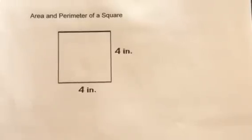We're going to solve the area and perimeter of a square. Remember that a square has all equal sides, all the way around.